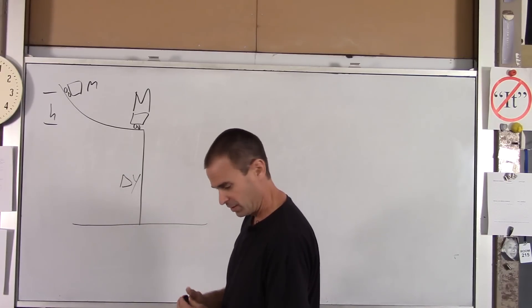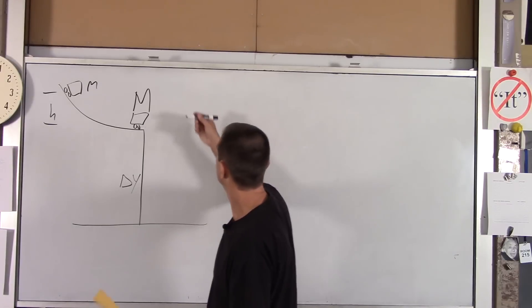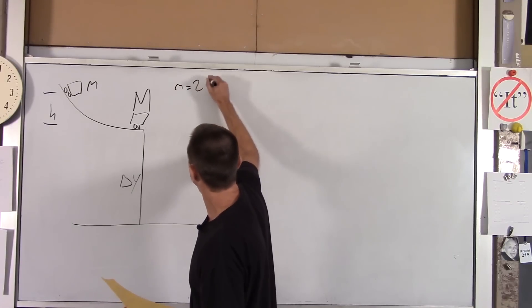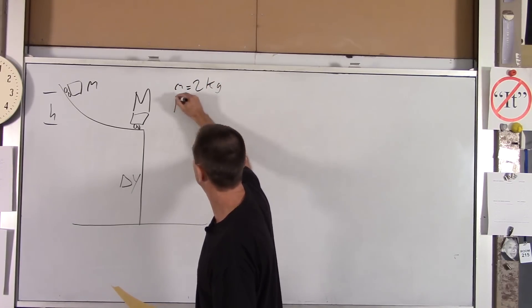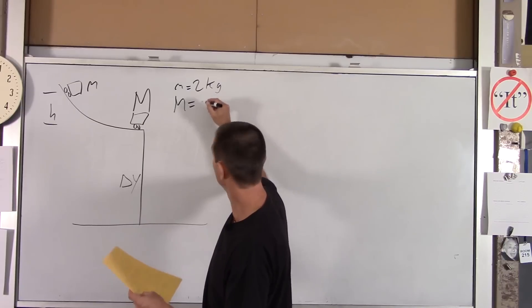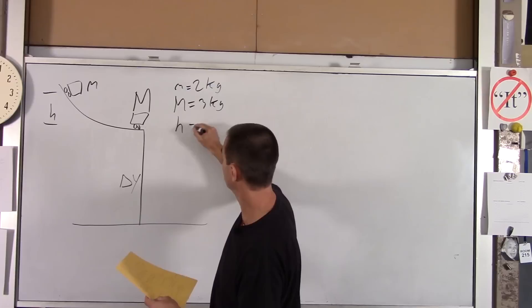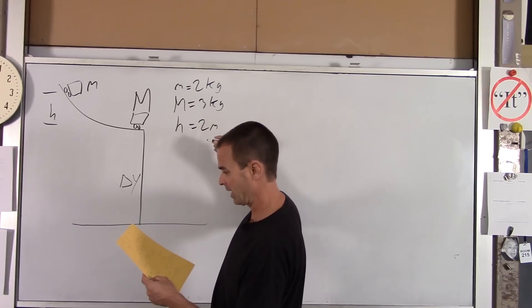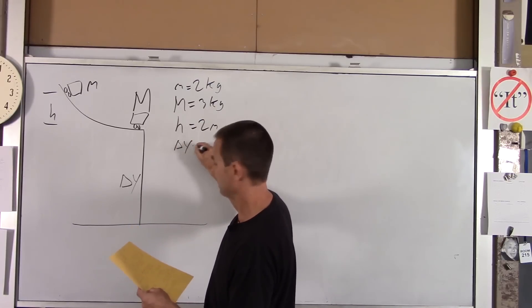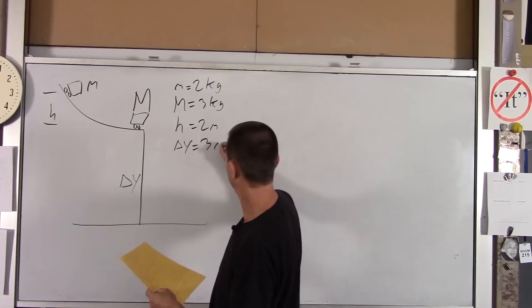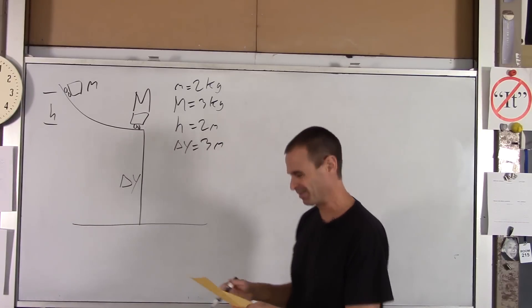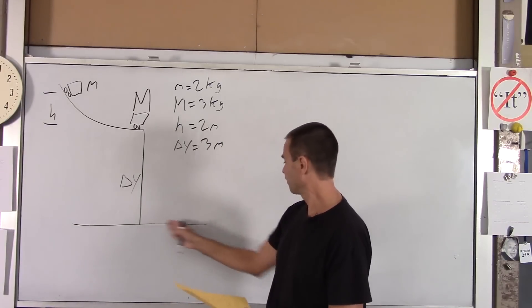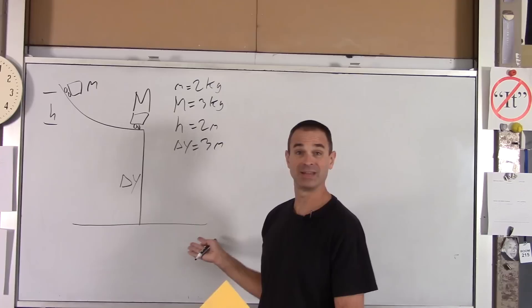Now here are the numbers for you. We've got little m is 2 kilograms. Big M is 3 kilograms. The height H over there is 2 meters. And delta y is 3 meters. So you've got a bunch of 2's and 3's in this problem. So we're asking for how far is that, which would be delta x.